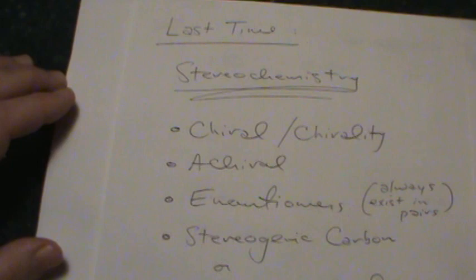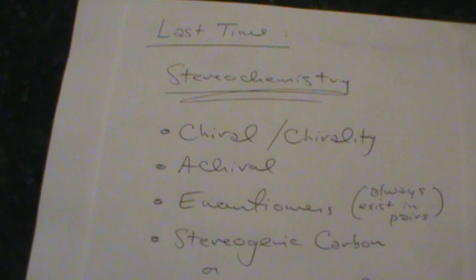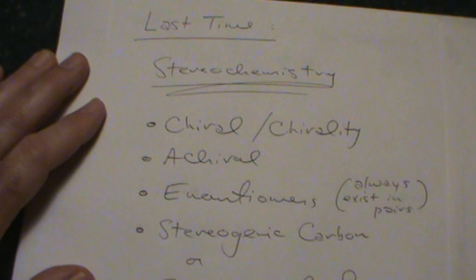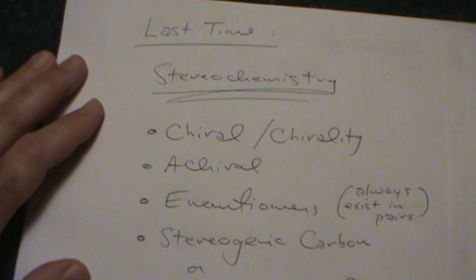That gives us everything we need to know for now about enines. A little later this semester, when we get into conjugated pi systems, we'll find there are some differences between molecules named as dienes or enines depending on where those pi bonds are located relative to one another. But that's a detail for later. We are now ready to jump back into stereochemistry.